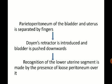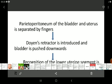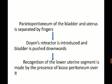The parietal peritoneum of the bladder and uterus is separated with the help of fingers, and then Doyen's retractor is introduced and the bladder is pushed downward. After cutting the parietal peritoneum, we reflect the bladder, then put the Doyen's retractor. The lower uterine segment is recognized by the presence of loose peritoneum over it, where the visceral peritoneum is loosely attached.